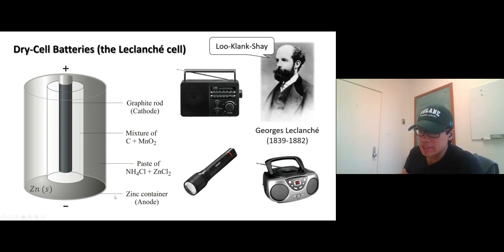The anode zinc is outside, which is like the container. The zinc metal can serve as an anode, and there's an inert—was it graphite, raw graphite, it's just carbon.